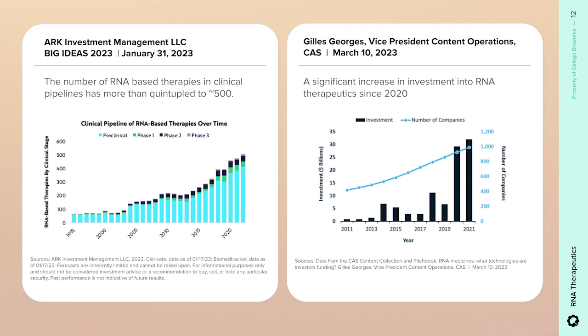We've all seen the impact and value of RNA-based vaccines — this is just the beginning. RNA-based therapeutics and vaccines have the potential to revolutionize medicine and offer treatment of a wide range of diseases, including targeting the undruggable. A report from ARK Investment Management showed a tenfold increase in annual RNA patents granted in the past 20 years, and the number of RNA-based therapies in the clinical pipeline has increased more than fivefold. RNA-based approaches showed lower cost and improved time to market, and there's been a significant increase in investment into RNA therapeutics since 2020.